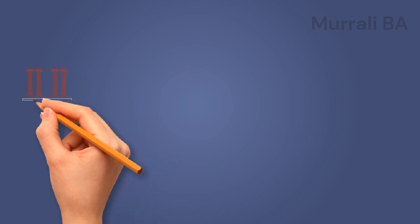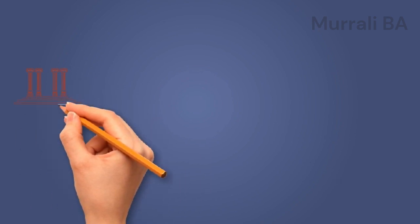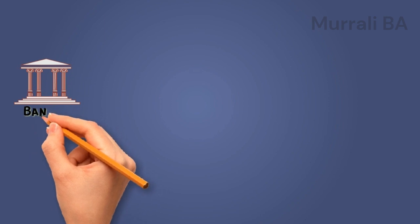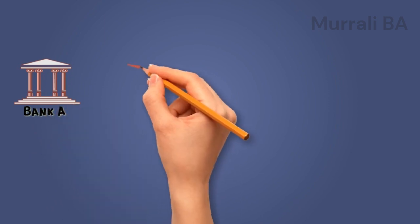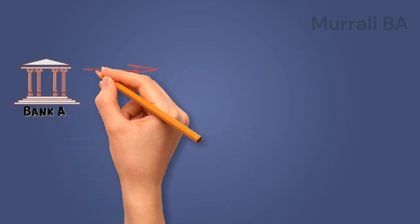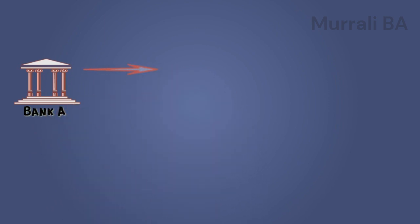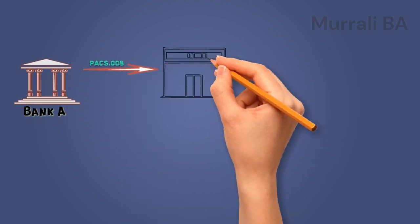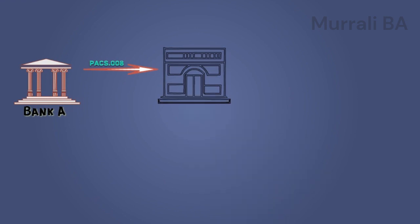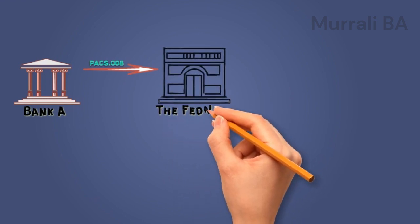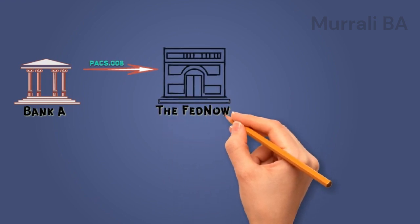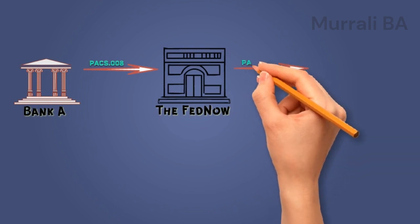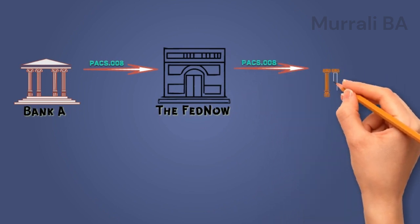First step: the debtor sends the payment request to Bank A where the account is held. Bank A performs the required technical and business validation. Once succeeded, Bank A will create a PACS 008 message and send it to the FedNow Clearing. FedNow receives the message and after all validations, the same PACS 008 is forwarded to Bank B, which is where the beneficiary holds an account.